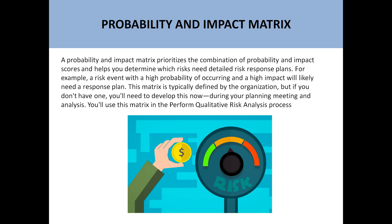The second thing is that we will identify the impact of that risk. Impact means what is the effect in terms of financial loss, time, cost, or revenue. So there are two things with respect to a risk: probability and impact. Risk is the uncertain condition of our project — you don't know whether it will happen or not. It will have some probability and impact. Probability means the chances of occurrence of a risk, and impact is in terms of time and cost.